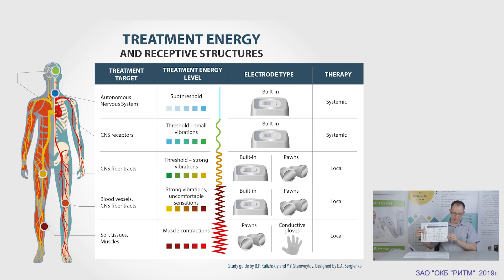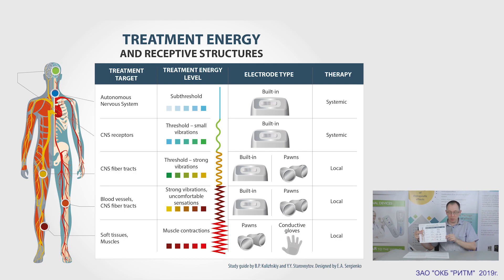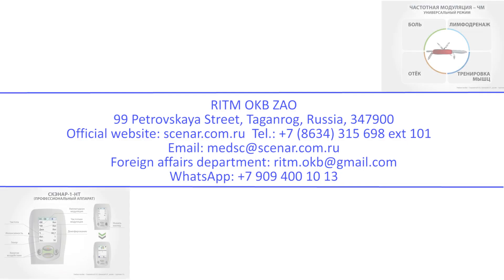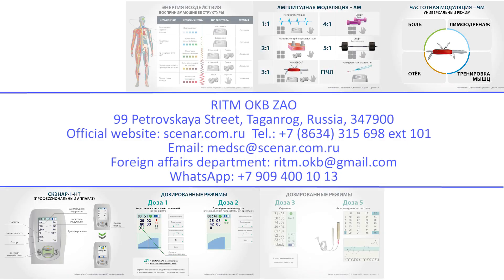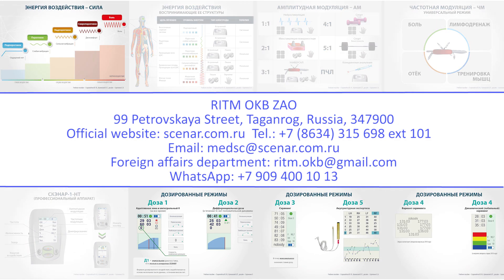This level is used for myostimulation and treatment of the locomotor system. The main electrodes to use here are pons and conductive gloves. Energy higher than the supra-threshold is used only for competitive analgesia — for example, when we use the bee sting mode.